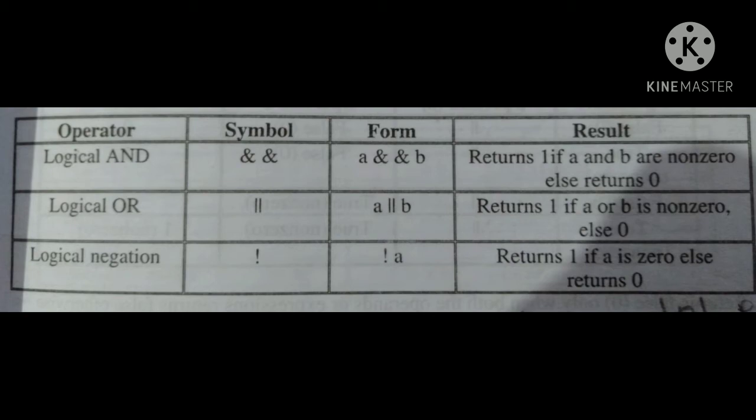Logical OR symbol is two standing lines (||). Form: A || B — returns 1 if A or B is non-zero, else returns 0. Logical negation symbol is !. Form: !A — returns 1 if A is zero, else returns 0.